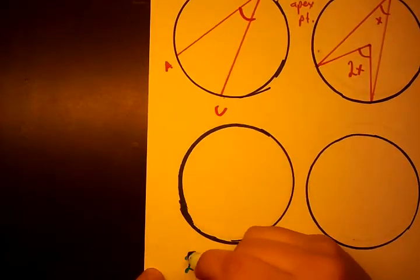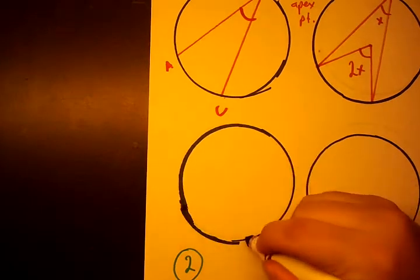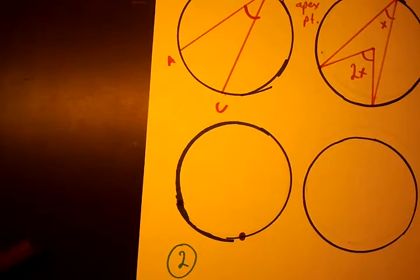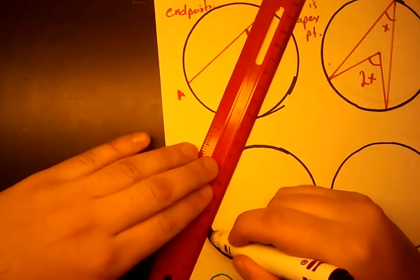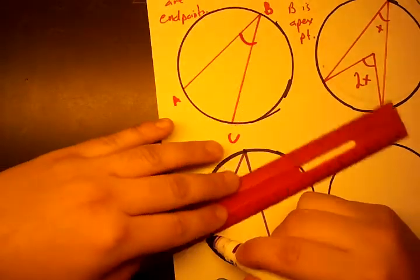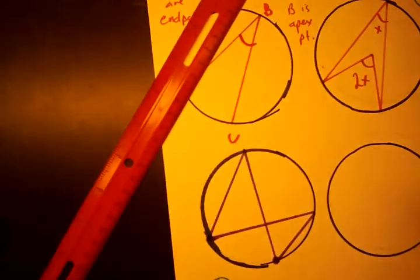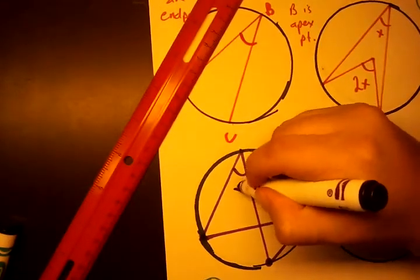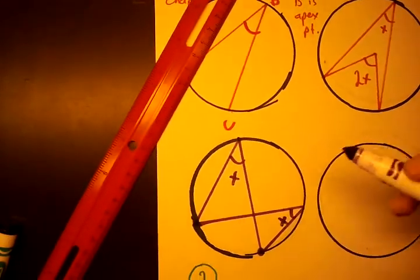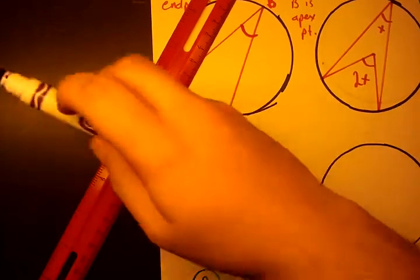Now we move to theorem number 2. Theorem 2 states that when we have two given endpoints, any inscribed angle that leads to those endpoints — here's one, and here's a radically different one — these angles are both the same. This angle x and this other angle is also x, because they both lead to the same endpoints. That's theorem number 2.